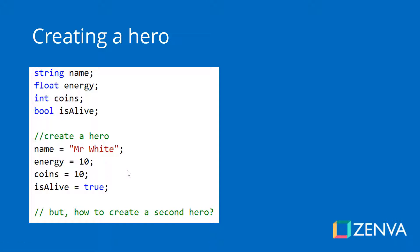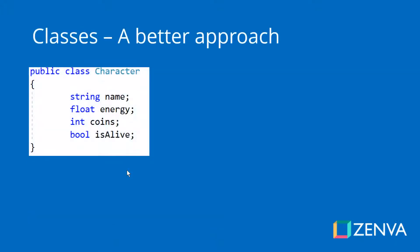But what happens when you want to create a second character? You're going to run into the issue that you'll have to create another four variables and call them something different, like second name or second energy. And what if you then want to create 10 characters? All of these variable names are going to start to get very confusing. It's going to be hard to work like that, so there is a better way — and that better way is to use a class.